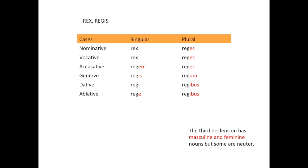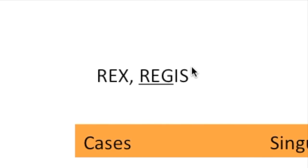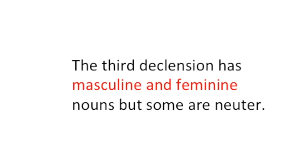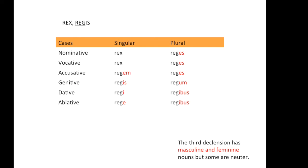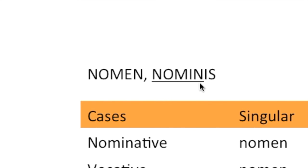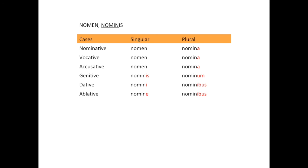For the third declension, 'rex, regis' is a model noun. To find the stem, take the 'is' off of the genitive 'regis.' Always use the genitive to find the stem in this case. The nominative and vocative singular is 'rex' — this is completely irregular, but don't worry, the irregular ones will be given in the dictionary. The third declension in terms of gender also has masculine and feminine nouns, and some are neuter. An example of a neuter noun in third declension is 'nomen, nominis,' which means 'name.' To find the stem, take the 'is' off of 'nominis.'